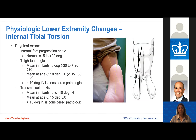For both femoral anteversion and internal tibial torsion, the definitive solution if natural history does not resolve is surgical — a derotational osteotomy. We reassure families that most cases resolve naturally, and we do not recommend physical therapy or bracing for either of these conditions.